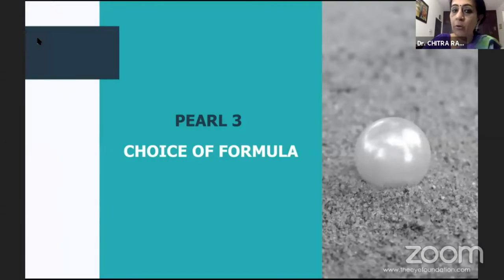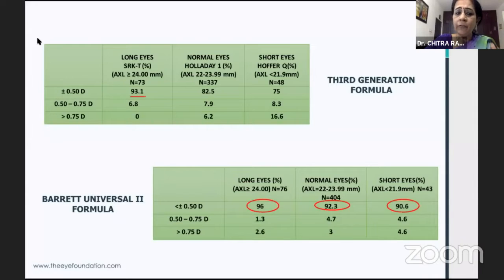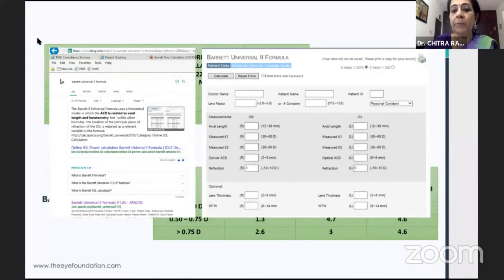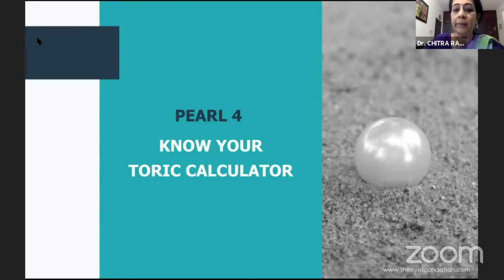Regarding the choice of formulae — we have done a study, and many of you would know that third-generation formulas work fine in normal eyes to an extent. But if you have access to the best formulas, you can get more than 90 percent of your patients within plus or minus 0.5 diopters. There are a number of data variables that have to be incorporated for the Barrett formula, which makes your results so much better.